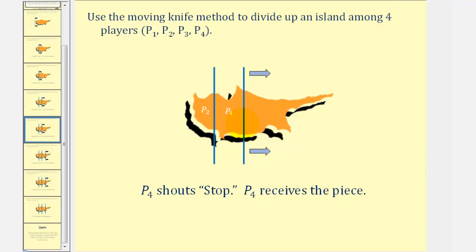Once again, the referee begins moving the line to the right. As it reaches this position here, let's say player three shouts stop and therefore player three receives this piece of the island.